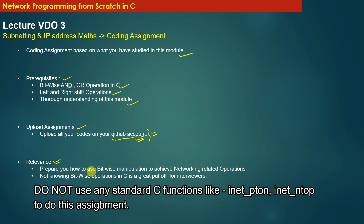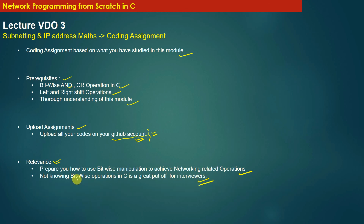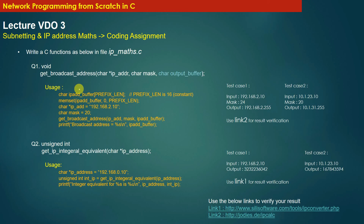The relevance of this assignment is that it will prepare you to use bitwise manipulation to achieve network-related operations. Not knowing bitwise operations in C is a great put-off for interviewers. Please note that if you are appearing for system programming jobs, you should be thorough with bitwise operations. You have to create a file called ip_maths.c and write C functions to accomplish the following functionality.